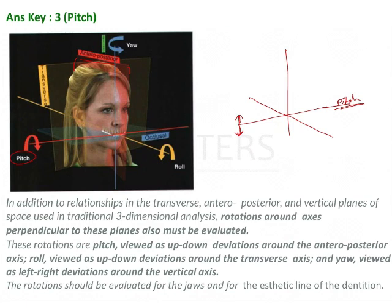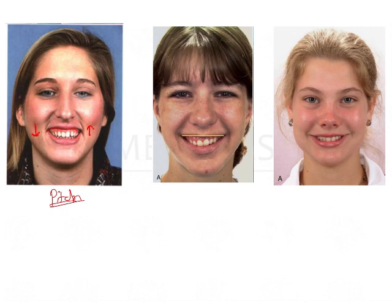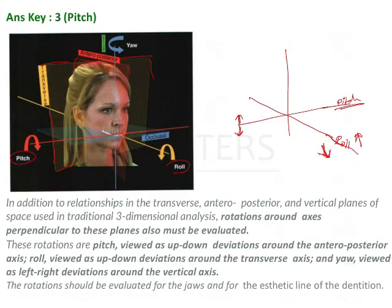The second plane is the transverse plane, marked here in yellow. The perpendicular axis through the transverse plane is used for roll discrepancies. Roll is up-and-down movement along the transverse plane — one side rotates down while the other rotates up. Clinically, this appears as one side of the patient's jaw looking lower than the other.